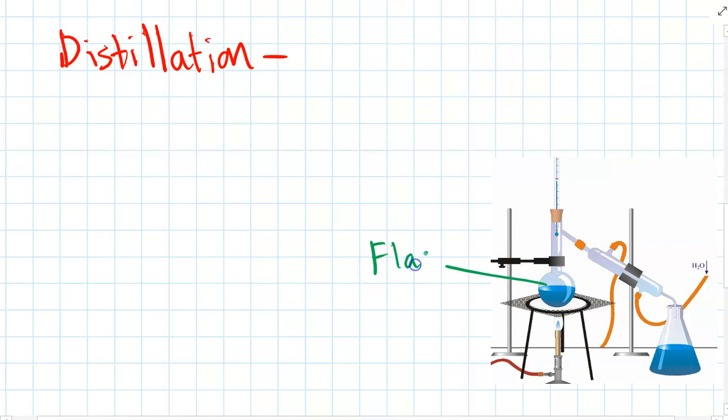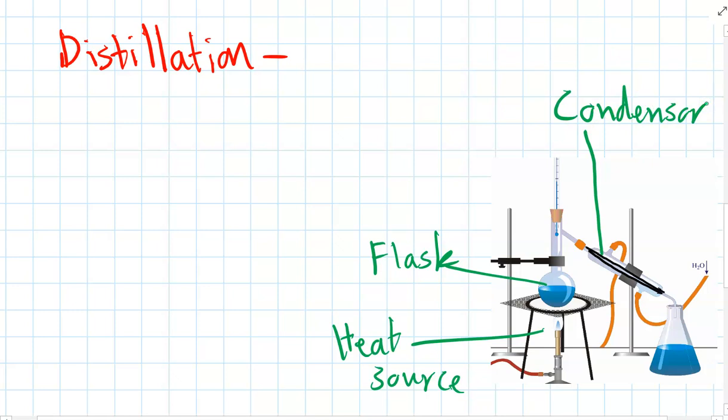Firstly, you need a flask containing your mixture, whatever solution you want to separate. And you need a heat source to heat up the mixture and start to evaporate the water out of it. And then also you need a tube that you can't see it on the diagram, but it actually has a thin tube going through it with water surrounding it. And that is called the condenser. And then you have a flask at the bottom, which collects the water.